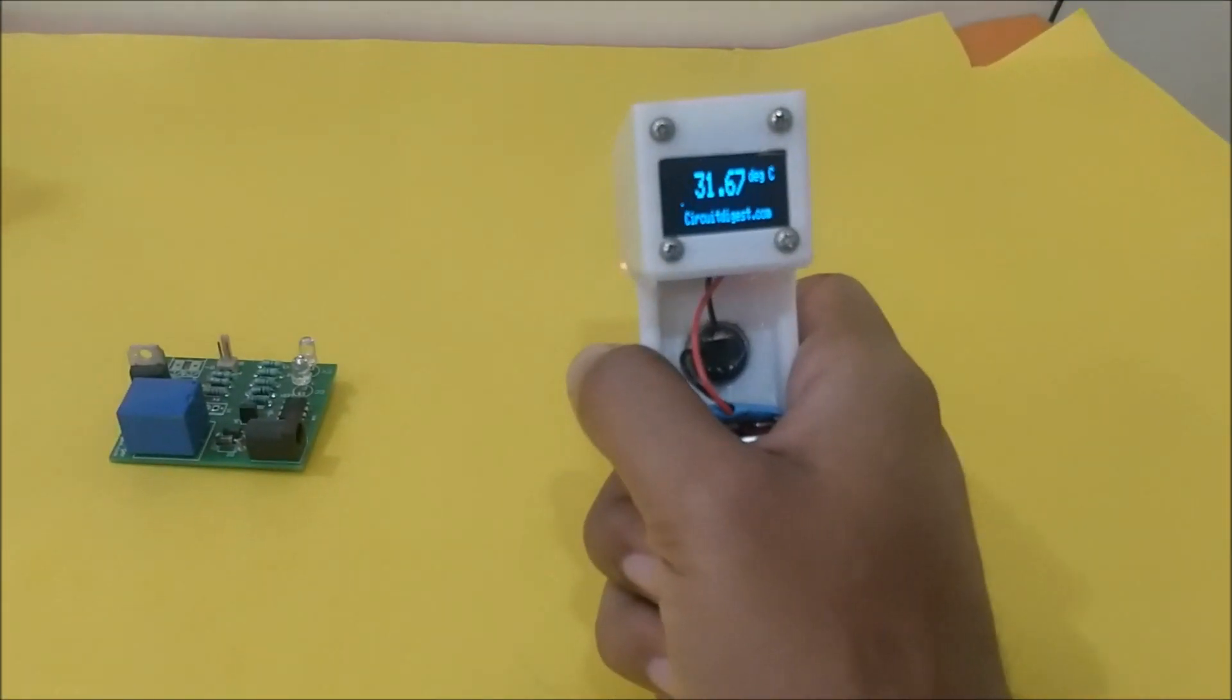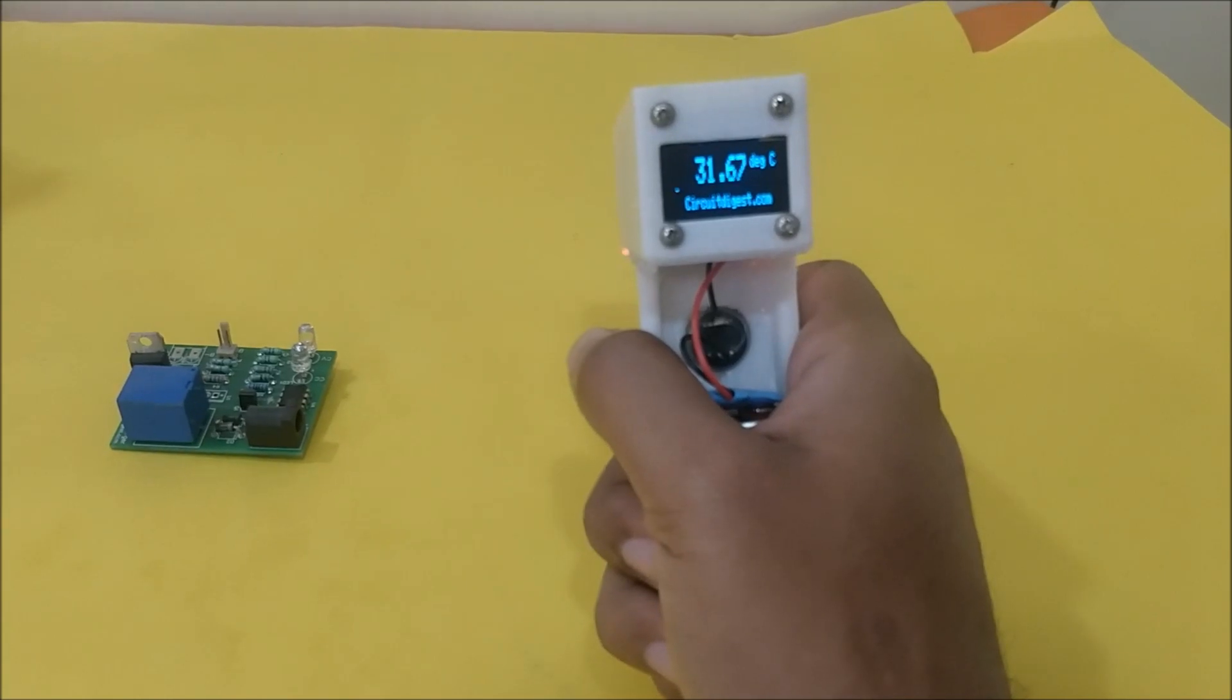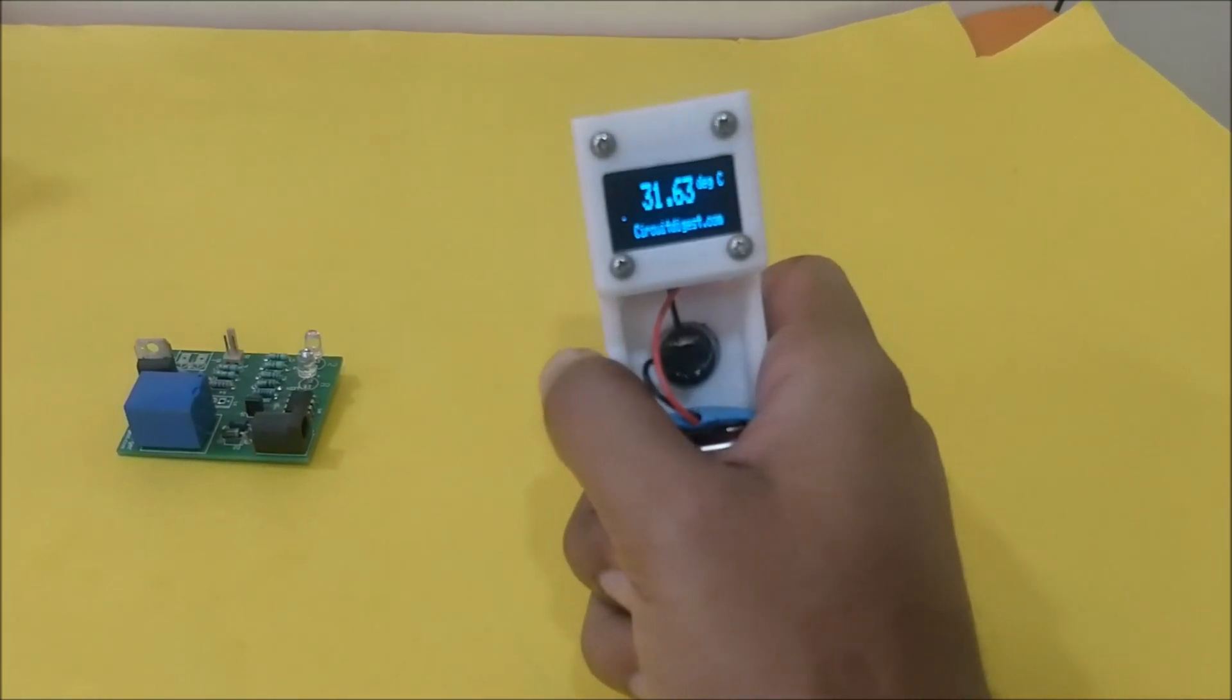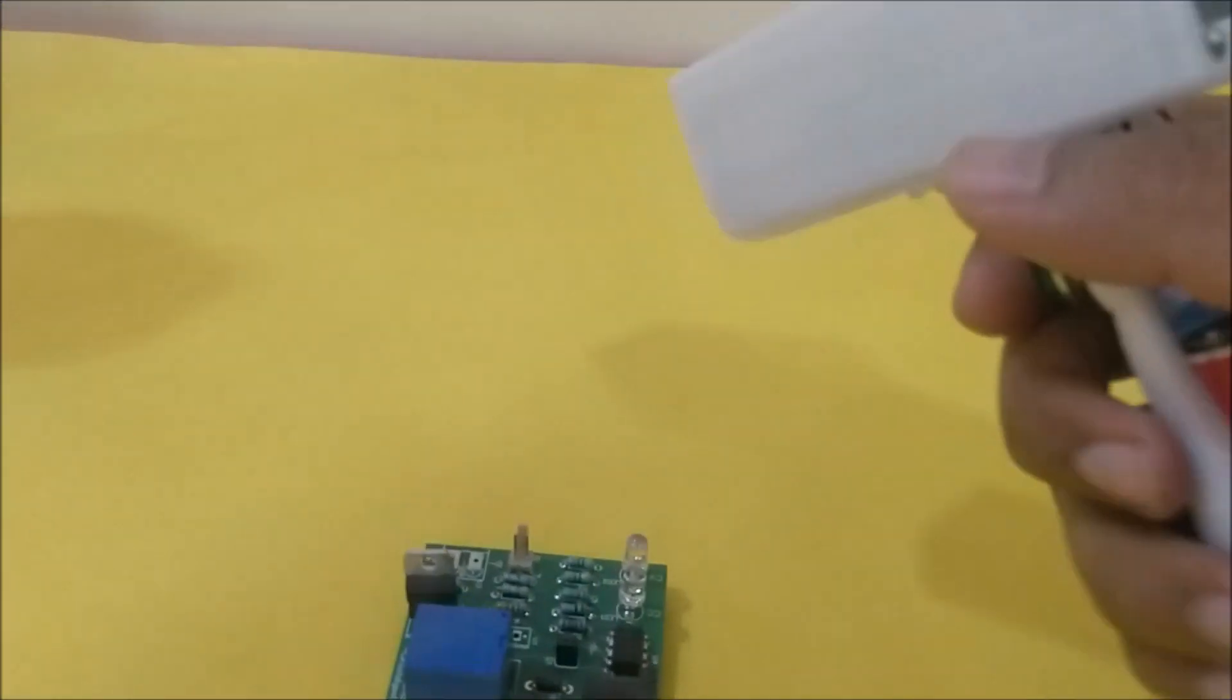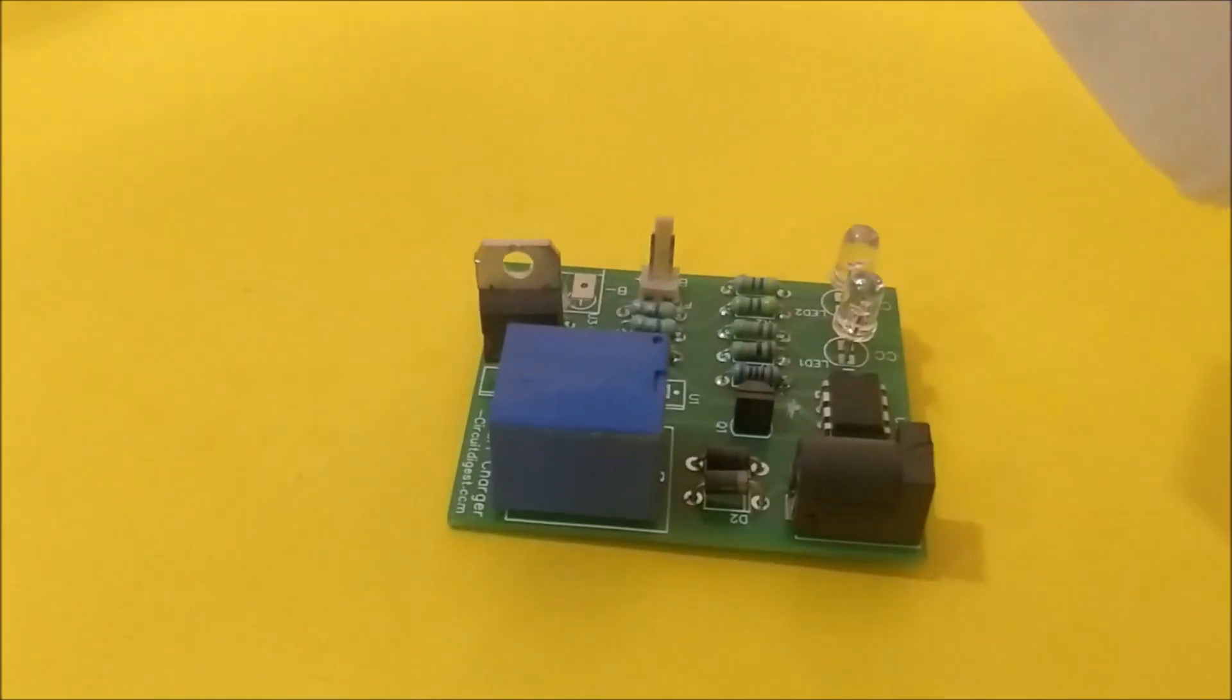Right now it shows 31.6 degrees Celsius, which is the atmospheric temperature as well as the temperature of this table. You can see the laser diode.